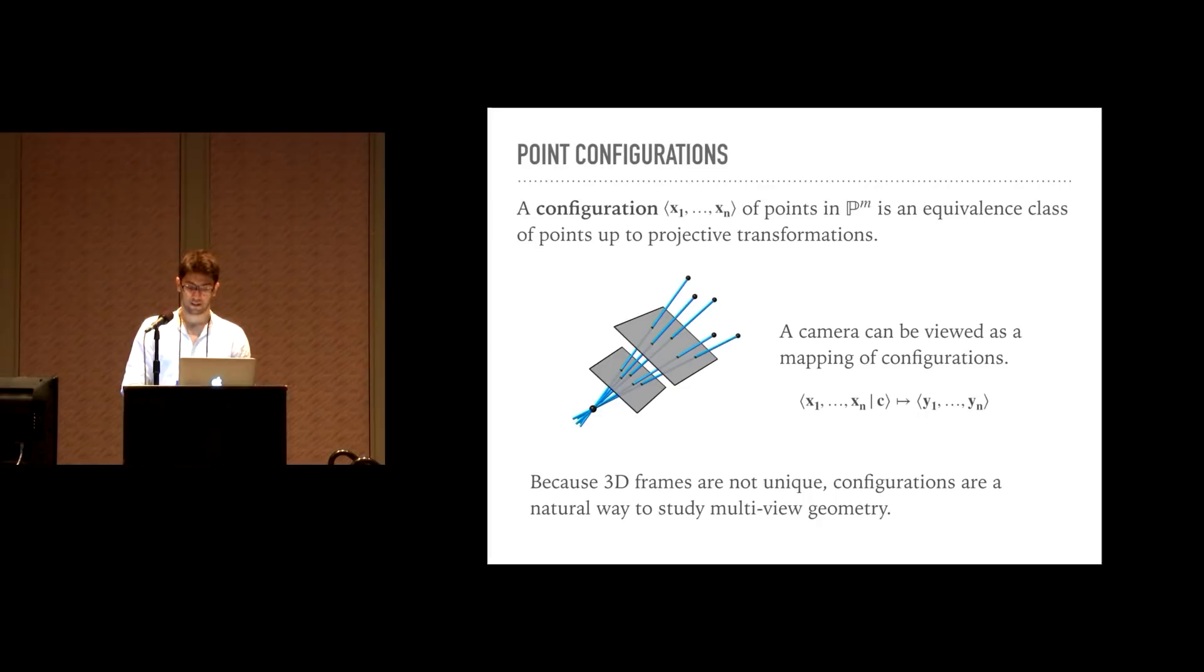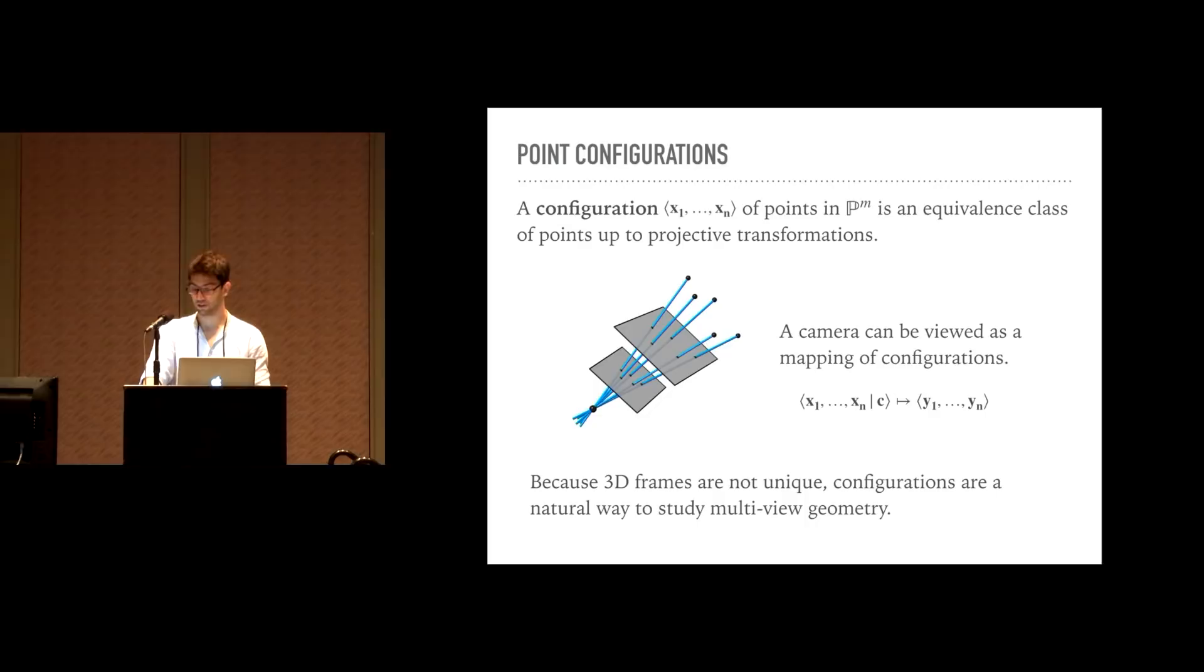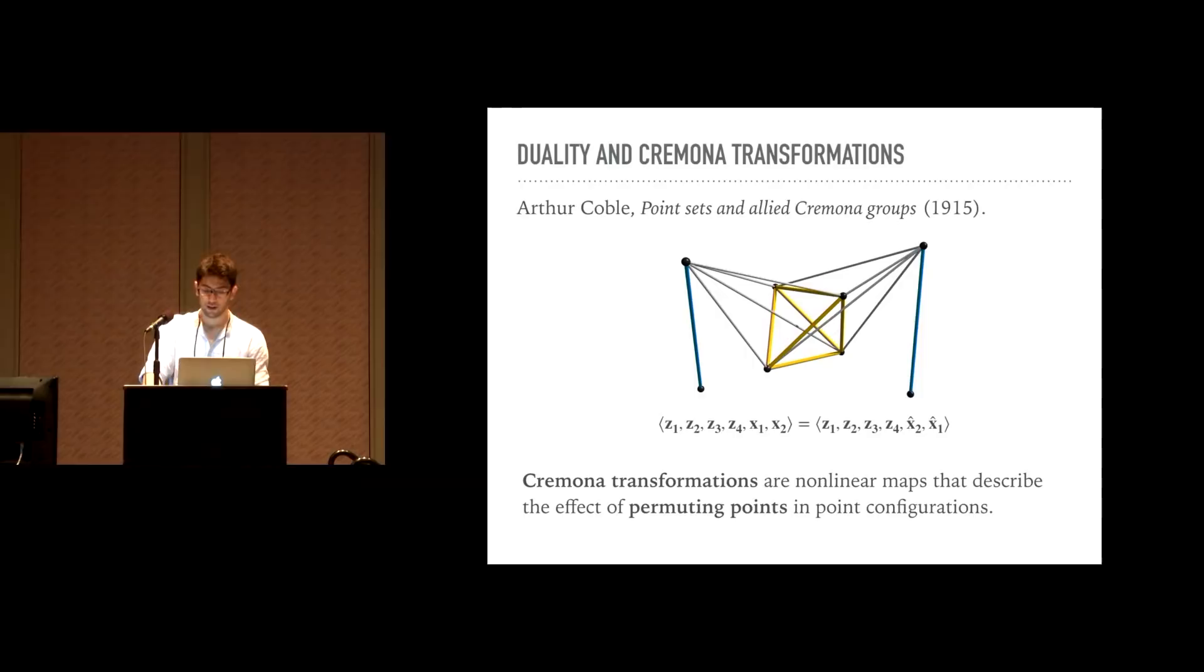It's easy to see that a camera can be seen as a mapping on configurations. Indeed, given N points in projective space, the configuration of these points together with the pinhole uniquely determines the configuration of points in the image. This perspective actually provides a natural framework for multi-view geometry, given that the reference frames in 3D space are usually not uniquely defined. It turns out that Carlsson-Weinshall duality can be understood using classical work on point plane configurations by Arthur Cayley dating back to 1915. In short, Cayley observed that the effect of permuting points in a configuration corresponds to non-linear transformations known as Cremona maps. Even though Cayley's work does not involve cameras, we know that configurations of points and pinholes determine images, and we can recover a coordinate-free version of Carlsson-Weinshall duality.